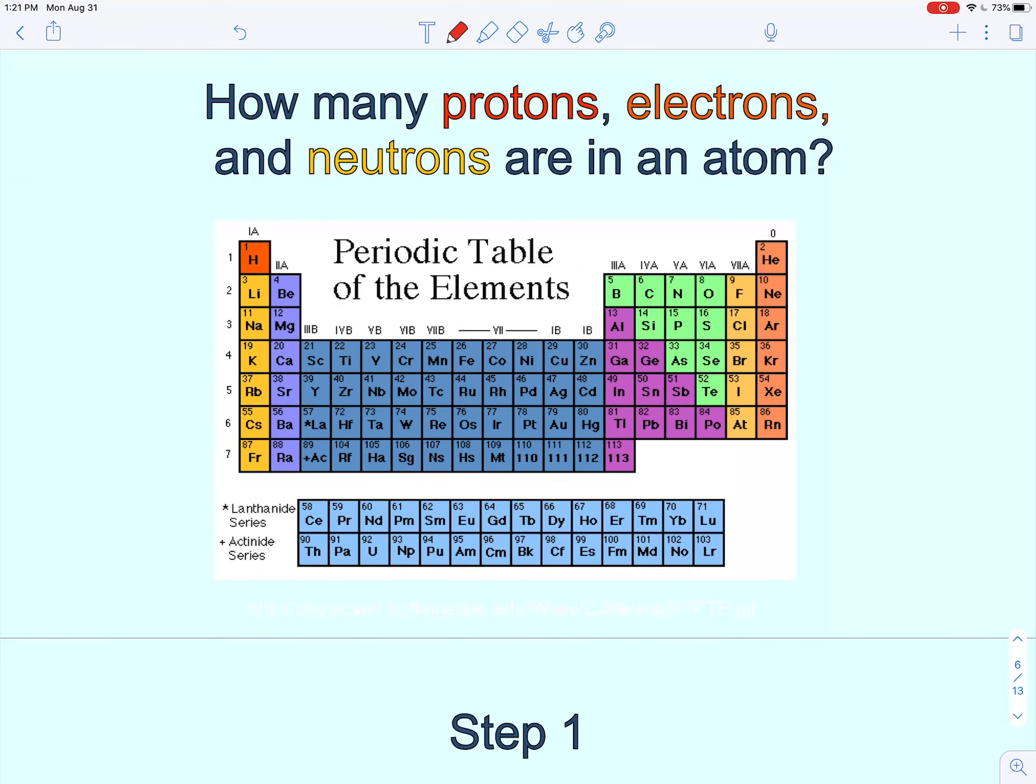And so the main part of today's lesson is to figure out how many protons, electrons, and neutrons are in an atom. To do that we're going to need a periodic table, so make sure you have one up. You can either print one that I posted or you can go to ptable.com. There's also one on the back of your textbook.